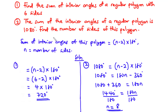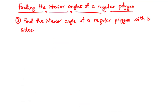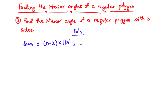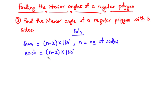Now let's discuss how to find each interior angle of a regular polygon. The sum of interior angles is (N minus 2) times 180 degrees. Since all interior angles of a regular polygon are equal, each interior angle is given by (N minus 2) times 180 degrees, all divided by N.